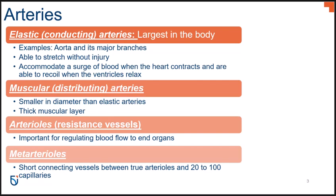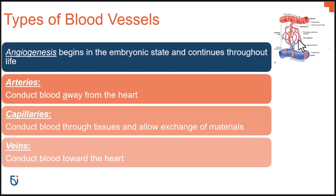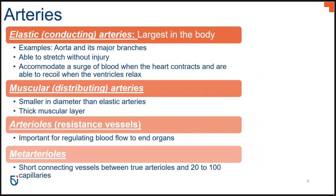Arterioles have the ability to change their diameter to allow for an increase or decrease in blood flow to an area. Meta-arterioles are very short connecting vessels that connect a true arteriole with the proximal end of anywhere from 20 to 100 capillaries, extending throughout the capillary bed. Meta-arterioles are very important when we discuss nutrients and oxygen diffusion at the level of the tissue.